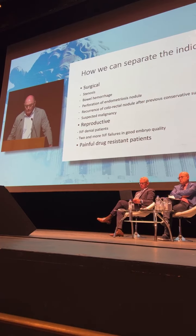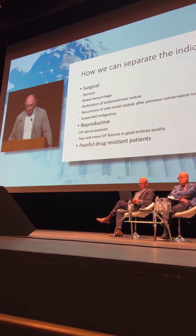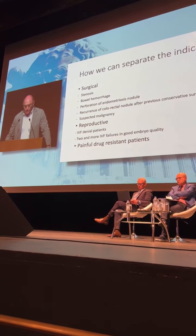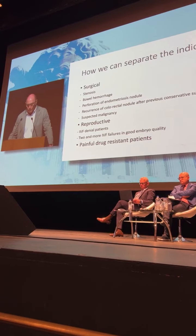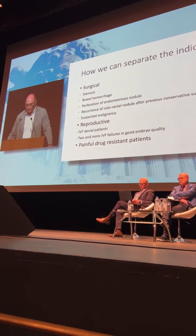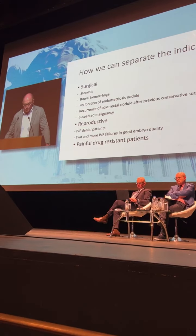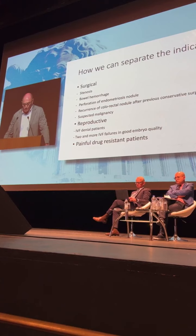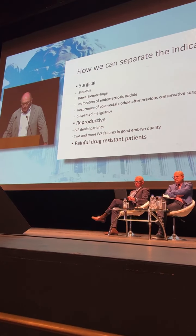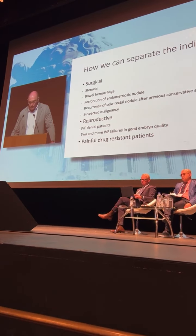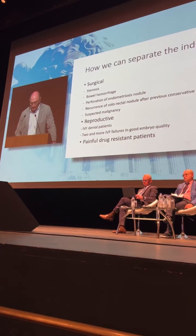How do we separate the indications for radical surgery versus conservative treatment of endometriosis? We can talk about surgical indications: stenosis, bowel hemorrhage, perforation of the endometriosis nodule, and malignant recurrence of colorectal/rectosigmoid nodule after previous conservative surgery, and of course suspected malignancy. We should also do this surgery for IVF-denied patients who had two previous IVF protocol failures with good embryo quality, and patients who had resistant pain despite medication.